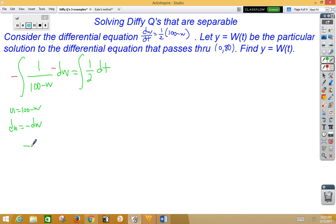So now I have negative 1/u du, which is of course natural log. So I've got negative natural log, but it's not really u, it's really 100-w on the left side.